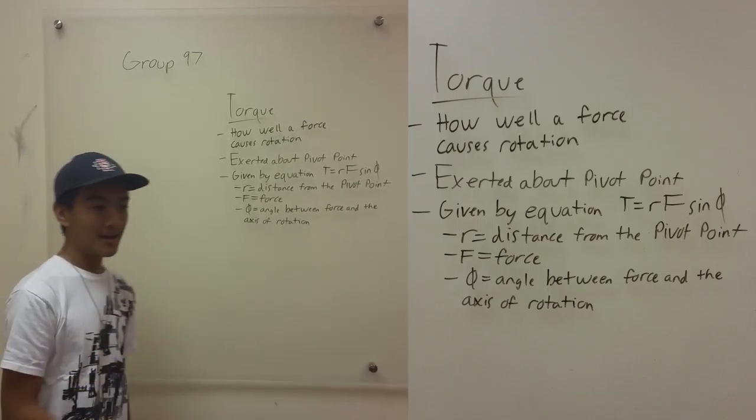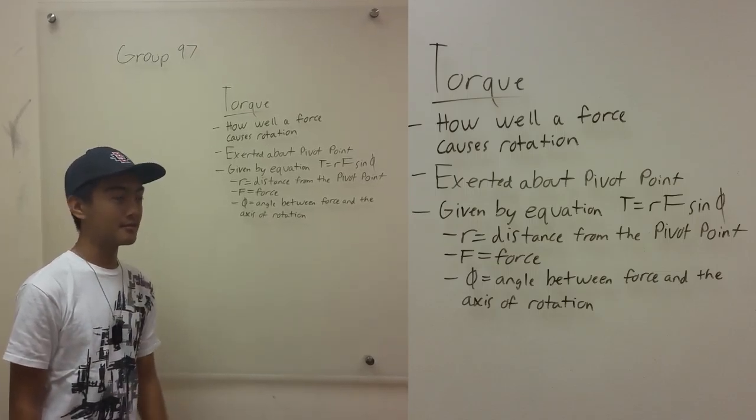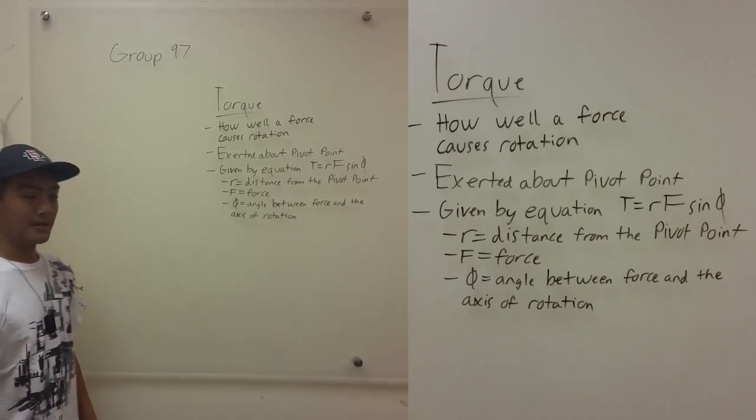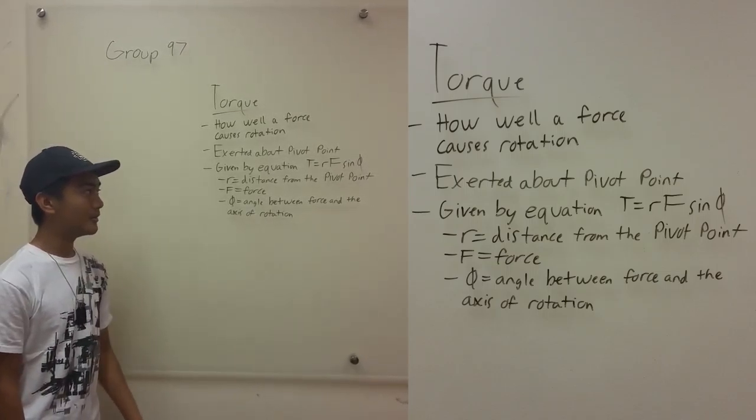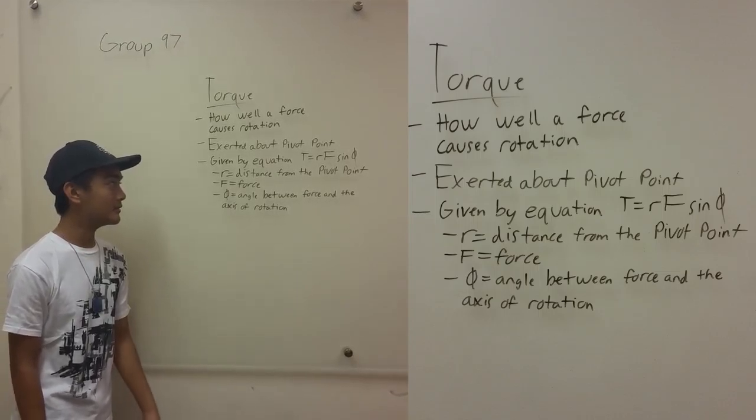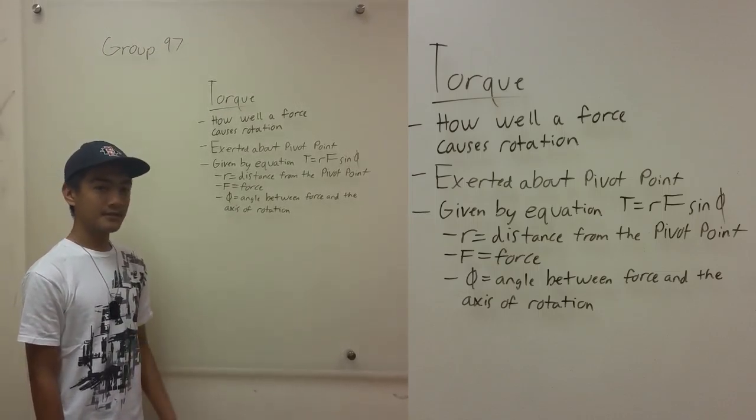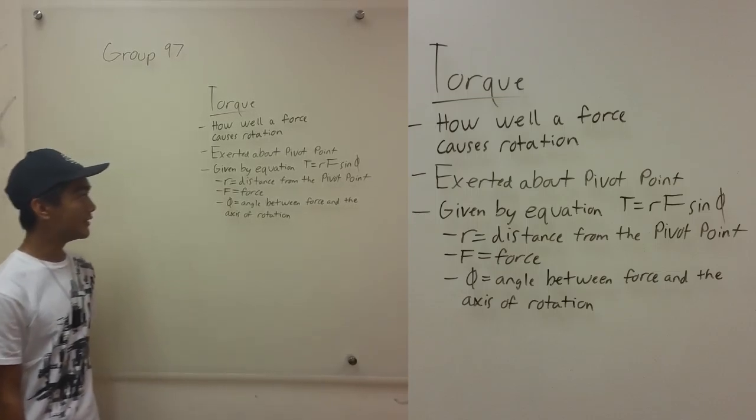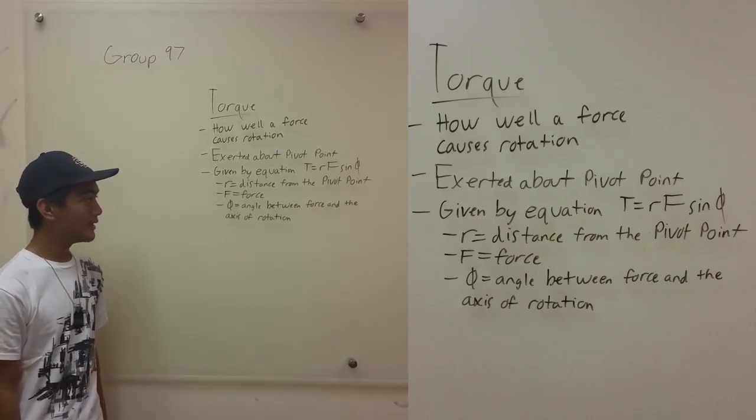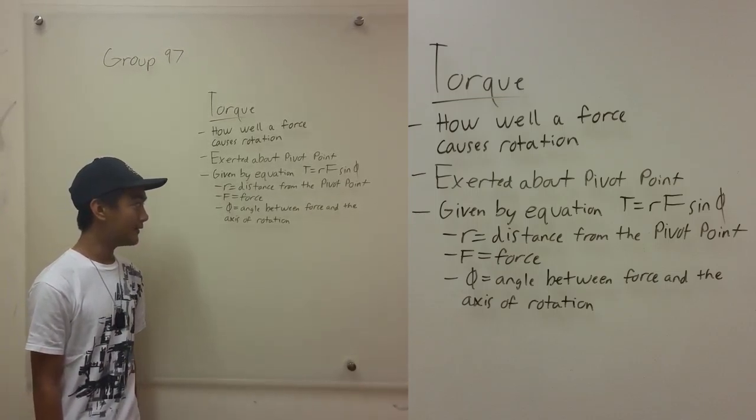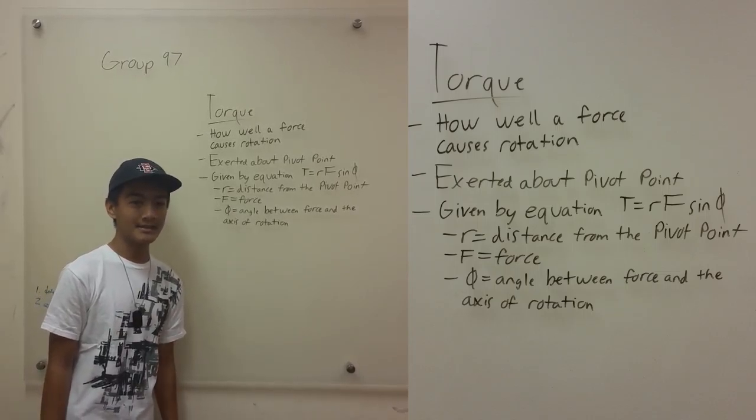Torque is basically how well a force causes rotation. It is exerted about a pivot point and is given by the equation torque T equals, or torque tau equals RF sine phi, where R is the distance from the pivot point, F is the force and phi is the angle between the force and the axis of rotation.